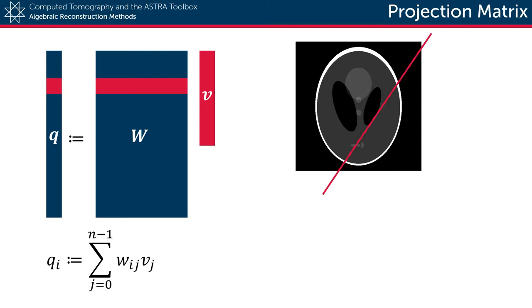Note here that the projection matrix is in fact very sparse, and most weights will thus be zero. Now the result of this linear combination is effectively a simulation of what we would measure on the detector if the object represented by the volume v were to be in the scanner.